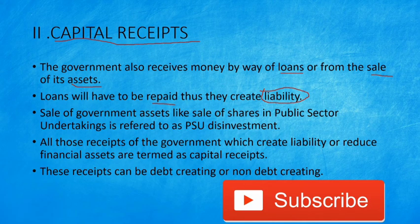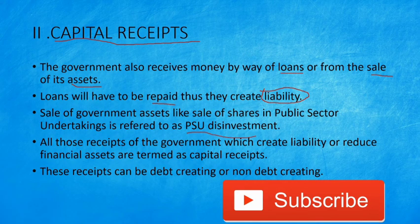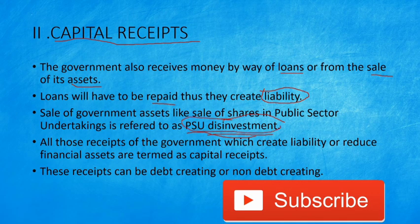Also, sale of government assets — like sale of shares in public sector undertakings — is referred to as PSU disinvestment. Disinvestment means the government sells its own assets. When we purchase shares and invest, we call it investment. When the government sells those shares, it is the opposite of investment — we call it disinvestment.